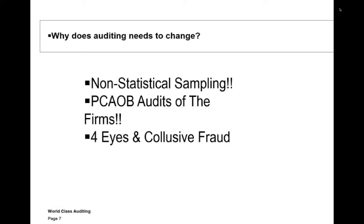According to statistics based on 2,000 actual cases, 42% of all fraud is collusive — meaning people are working together. Almost all financial fraud is collusive, meaning more than one person is involved. Our whole control environment is based on what's called the four-eyes principle — two people looking at what's going on. That doesn't help for collusive fraud. So the thousands of controls you're going to go out and test are not even the controls that will stop most of the fraud going on. We have non-statistical sampling, we're failing as per the oversight board, and we have the wrong control process in place.